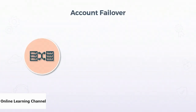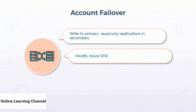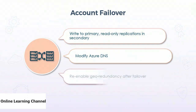Failover for a geo-replicated Azure Blob Storage account is a manual process initiated by the customer. By default, data is only ever written to the primary region, and all replications to the secondary region are read-only. Initiating the failover process updates the DNS entries in Azure to point to the secondary storage account and resumes write access to the secondary data. Along with the DNS update, the failover process will configure the storage accounts to be locally redundant, discontinuing geo-replication processes. The customer must re-enable geo-redundancy after a failover event.